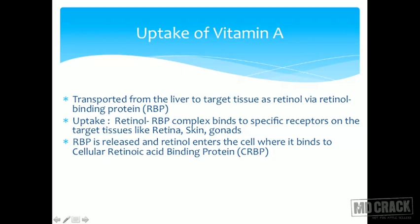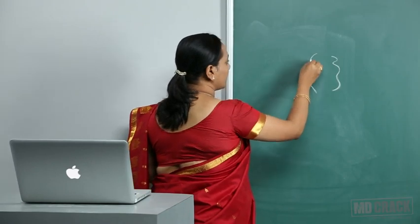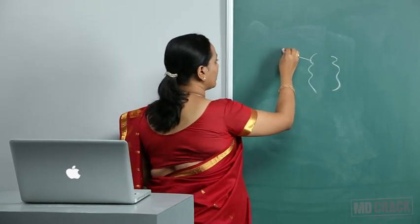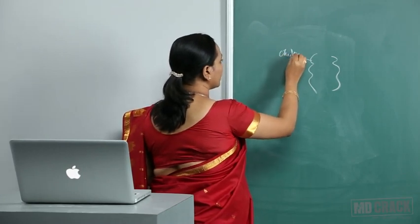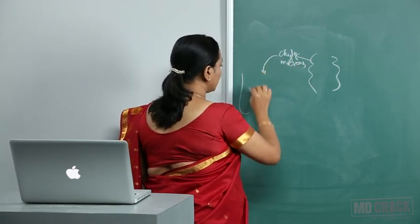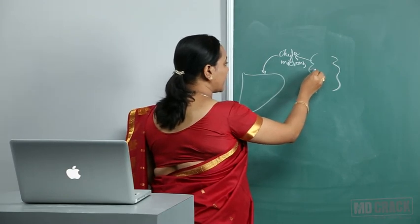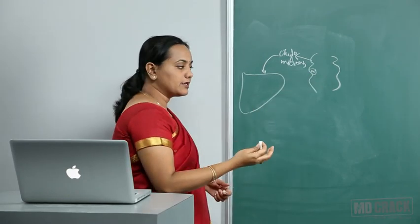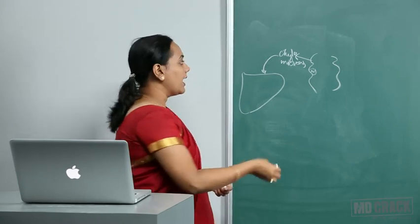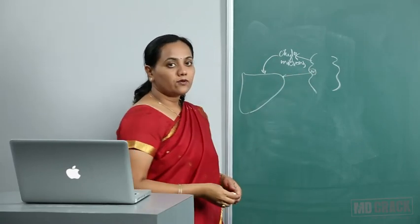Once retinol enters the cell, it must bind to something else since it is in an aqueous medium. It binds to what is called cellular retinoic acid binding protein. To summarize the pathway: vitamin A is absorbed from the intestine and travels as chylomicrons through the lymphatic circulation, reaching the liver via chylomicron remnants. Carotenoids can also be broken down in the intestinal cell to form retinol or retinoic acid, which then reach the liver.